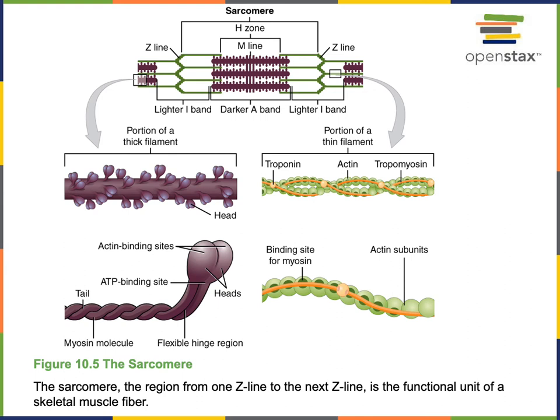During excitation, calcium will bind to troponin, and troponin will change shape, causing tropomyosin to move off of the binding site for myosin on actin. This will enable myosin heads to bind to actin — the first step of the power stroke cycle — known as crossbridge formation.